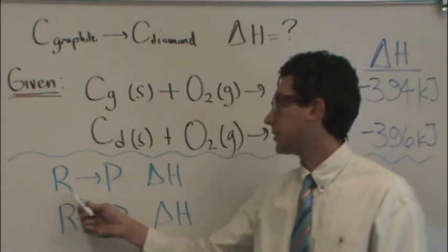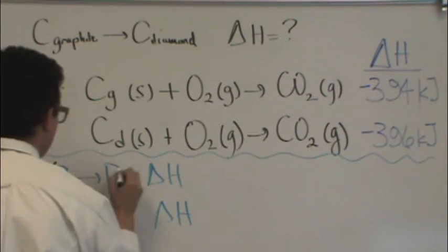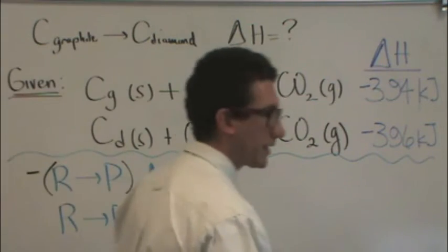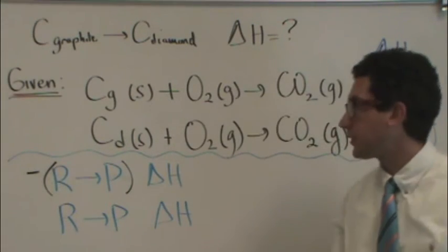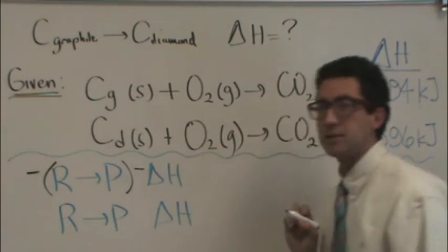Let's say you have a reaction that R goes to P, and it has a given delta H. If you need to take this reaction and multiply it by a negative, which in essence is flipping the reaction, what that means is that you're multiplying the delta H by a negative 1.